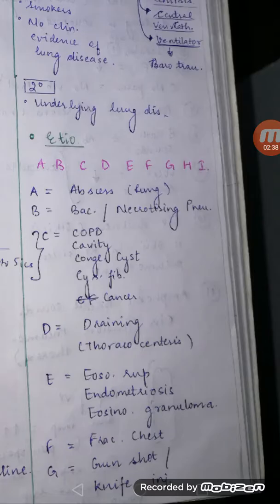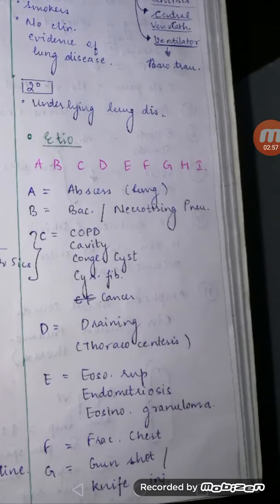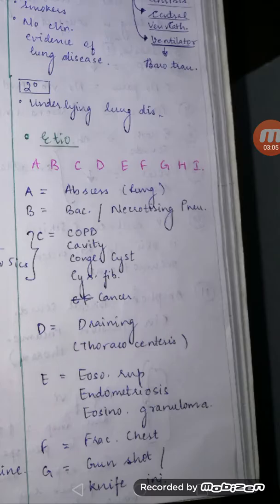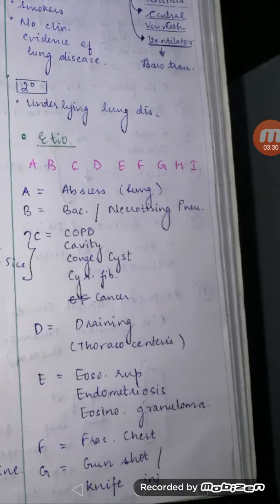D is draining — meaning thoracocentesis. With E there are three: esophageal rupture, which has come up repeatedly even in pleural effusion causes; endometriosis, as research has shown endometriosis tissue can be present in the lungs and cause pneumothorax; and eosinophilic granuloma.